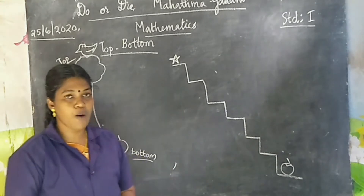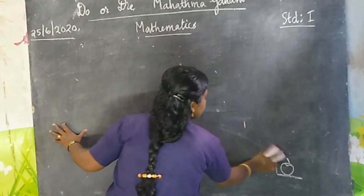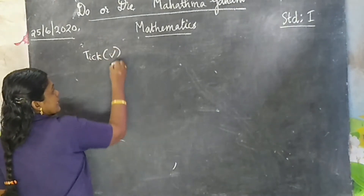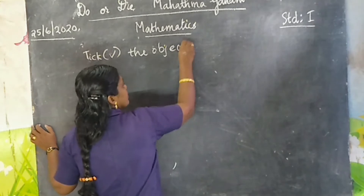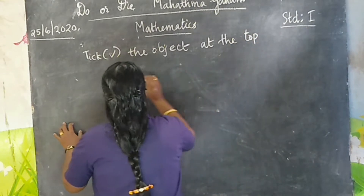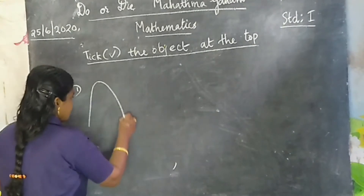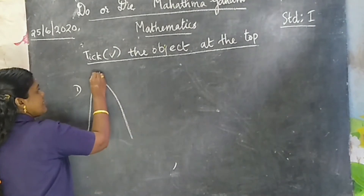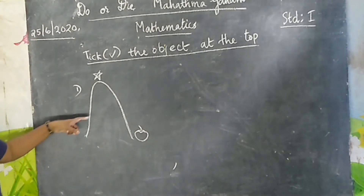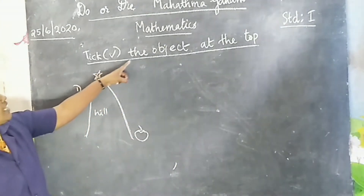Then we can do two problems. Take your notebook and write. Take the objects at the top. First question: a star and an apple. This is a hill. A star and an apple. Question is: take the object at the top. Which one is at the top?